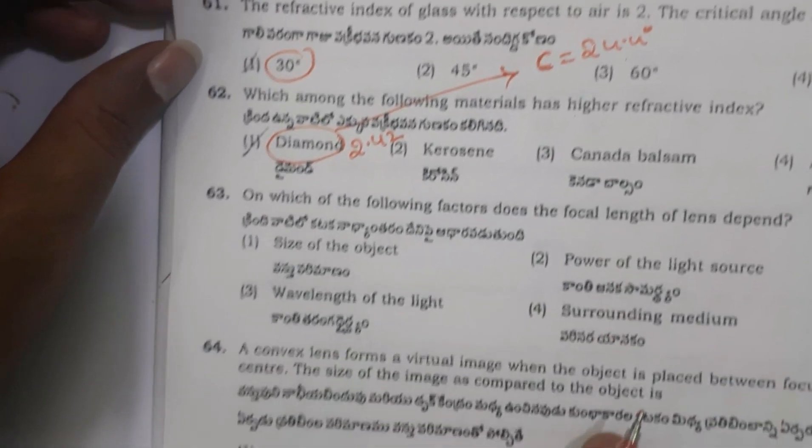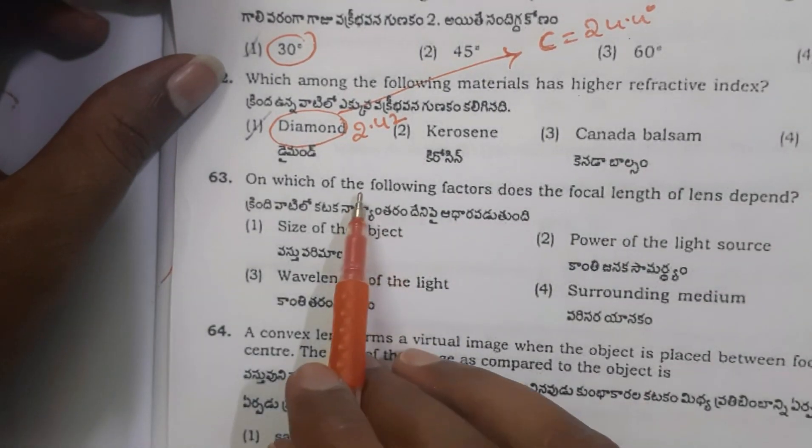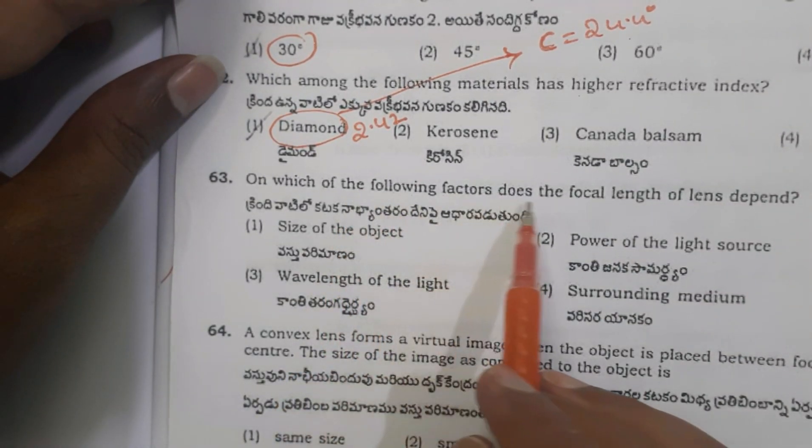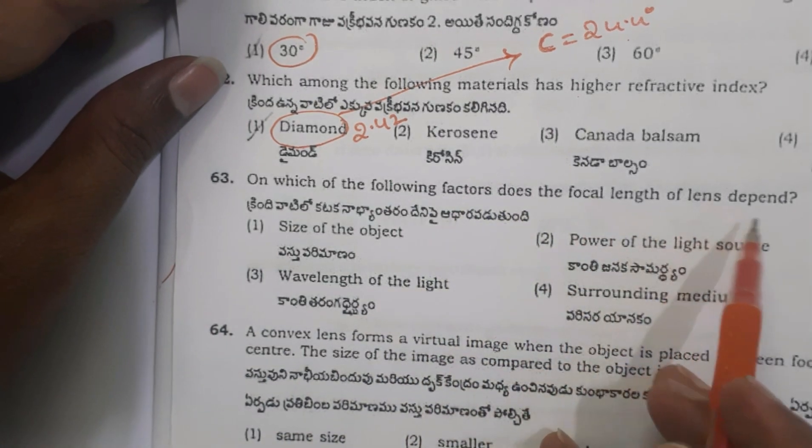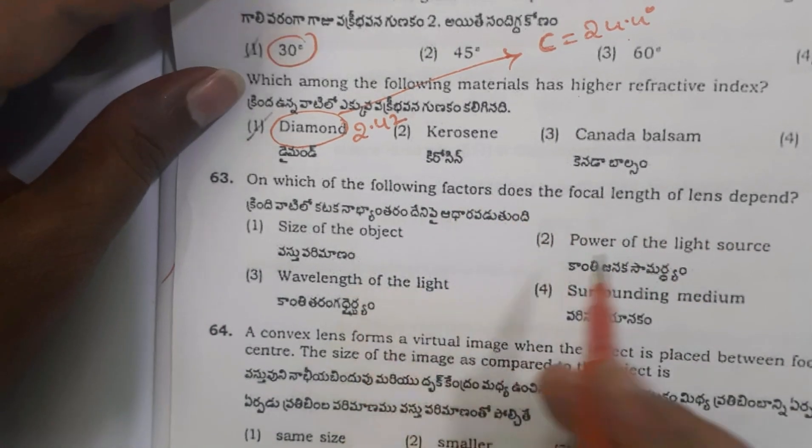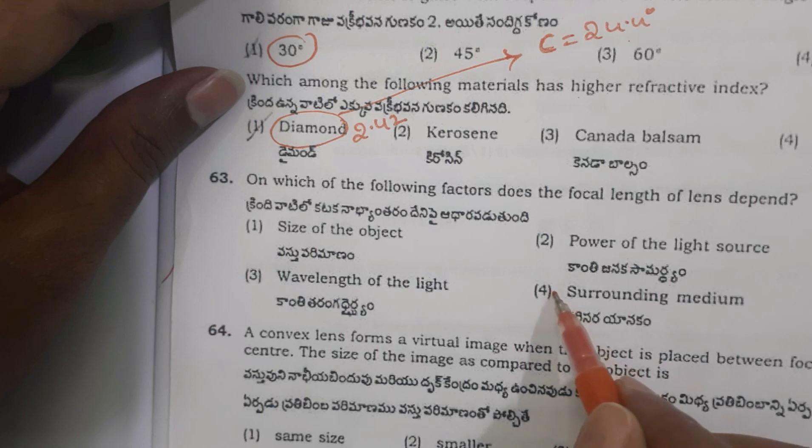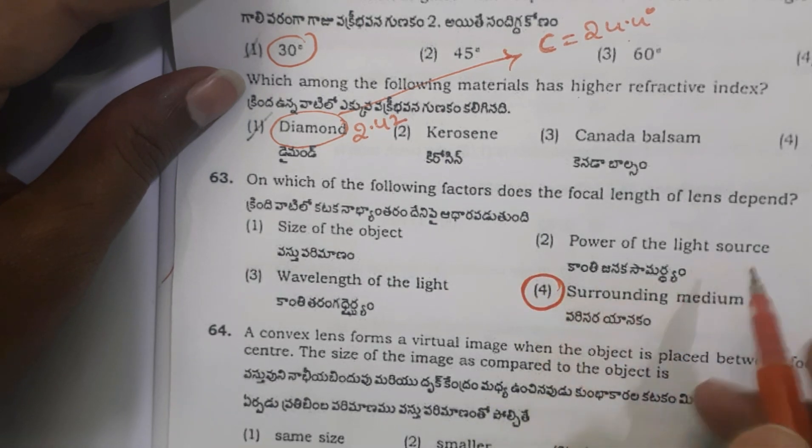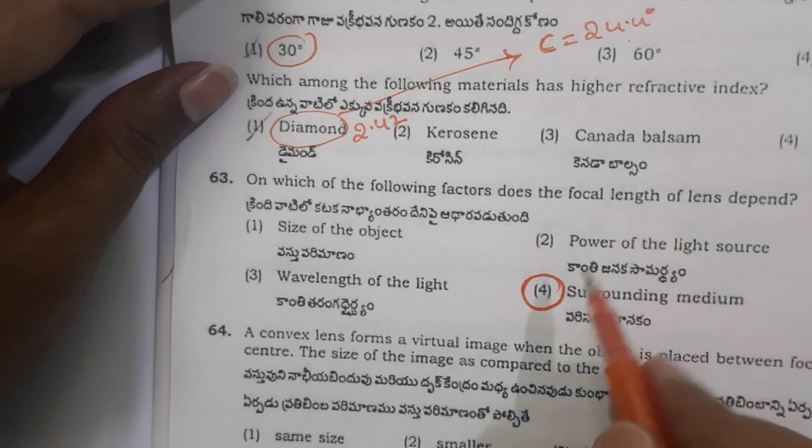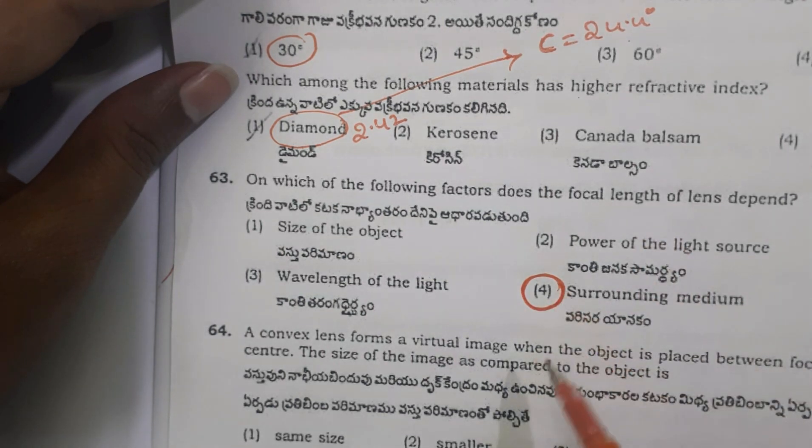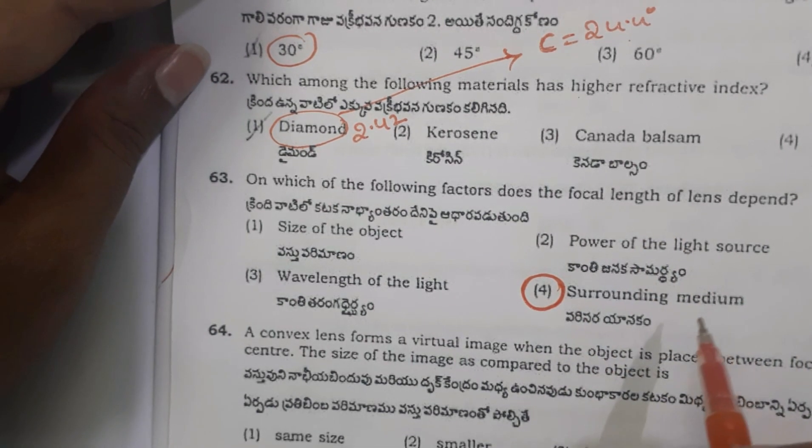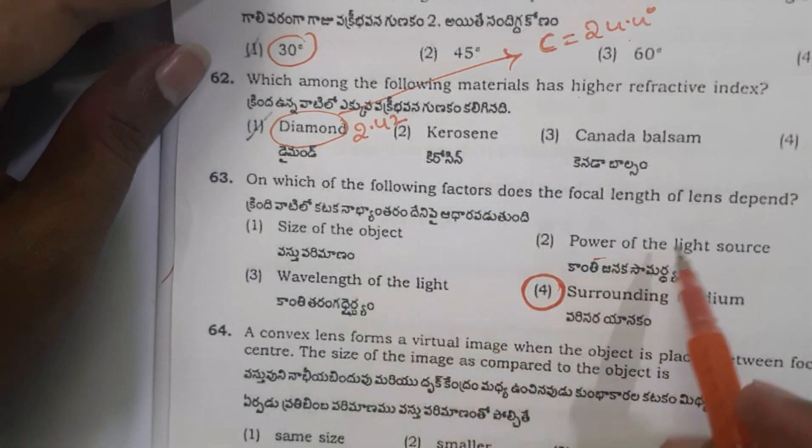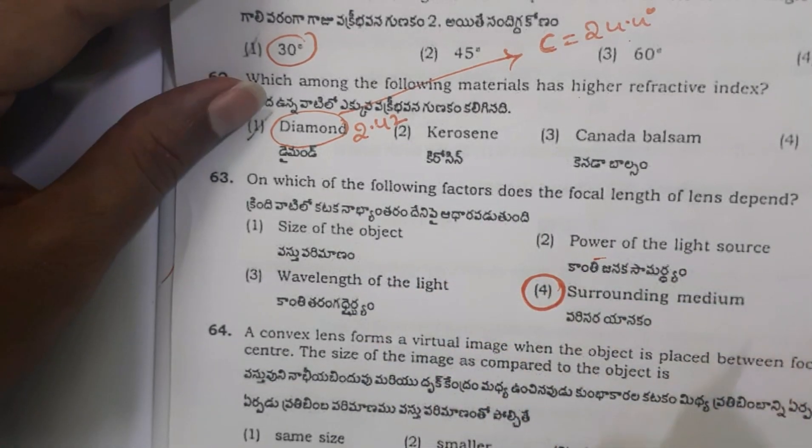Next, question 63: On which of the following factors does the focal length of lens depend? Focal length of the lens depends on surrounding medium and also size of the lens, but size of the lens is not in the options, so the answer is surrounding medium.